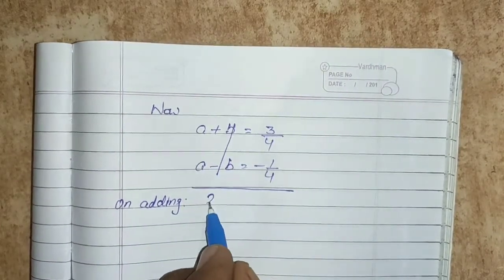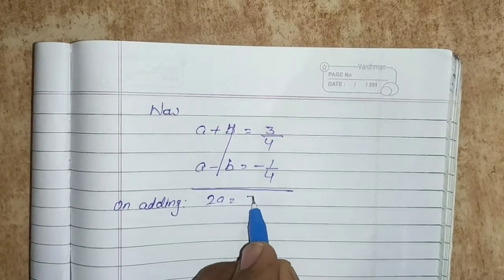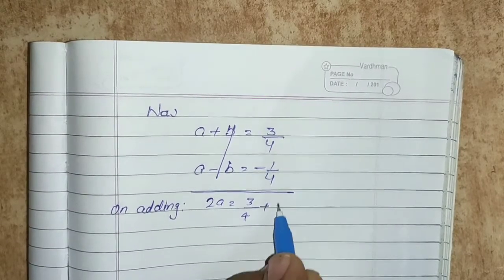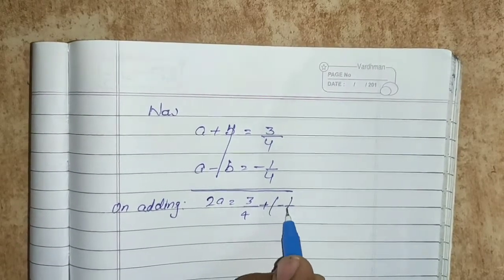Adding equations 3 and 4: a plus a becomes 2a, and 3 by 4 plus minus 1 by 4.